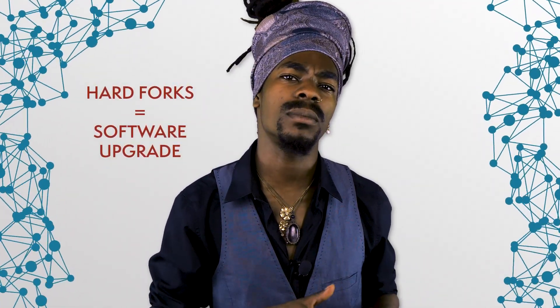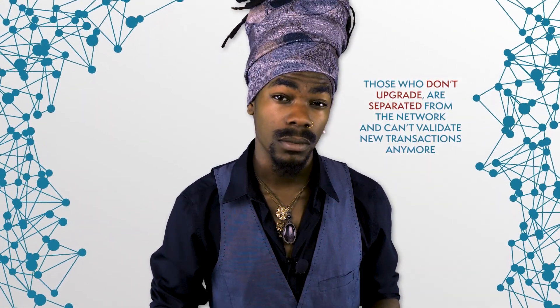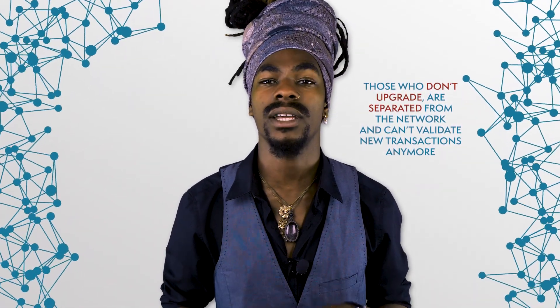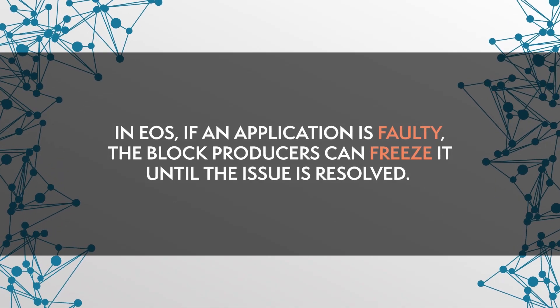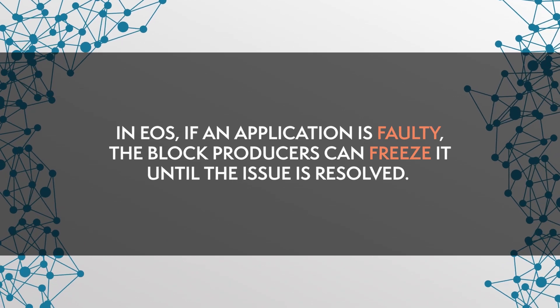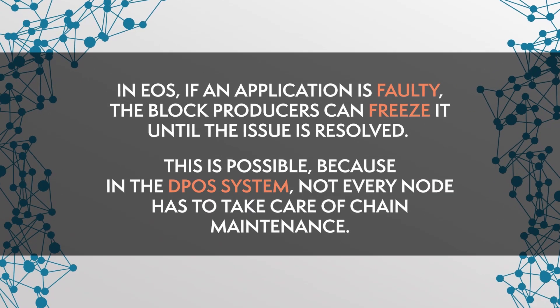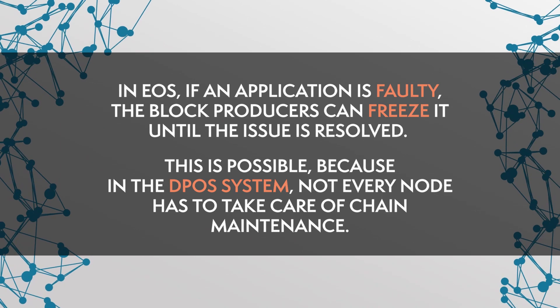Secondly, flexibility. The Ethereum community experienced a split because of a DAO attack in 2016, which led to a hard fork. Hard forks refer to a software upgrade that isn't compatible with the older version. All participants must upgrade to continue validating new transactions; those who don't are separated from the network. In EOS, if an application is faulty, the block producer can freeze it until the issue is resolved, because in the DPoS system, not every node has to take care of chain maintenance.